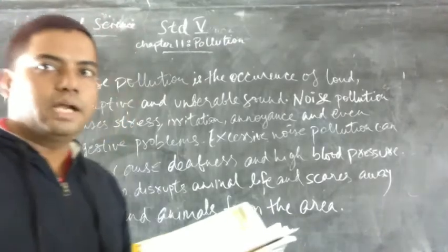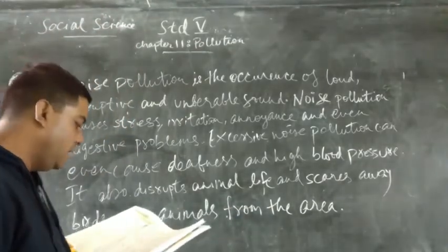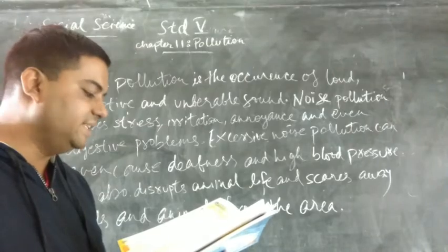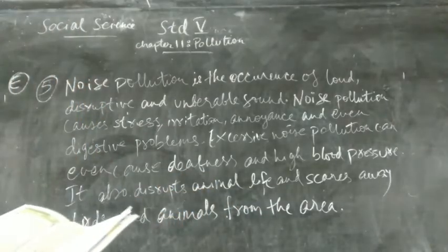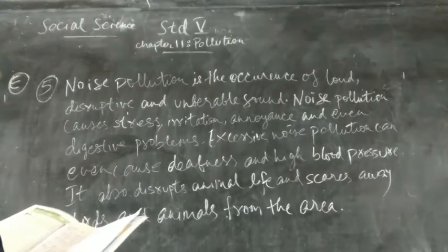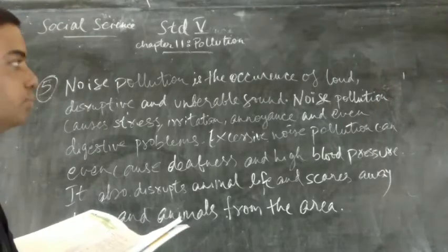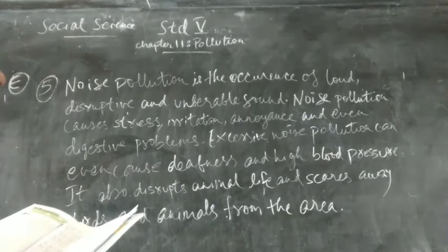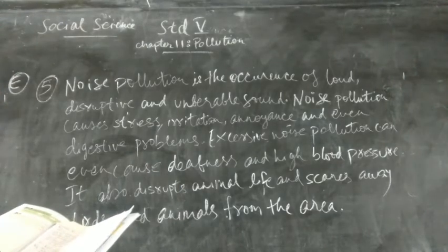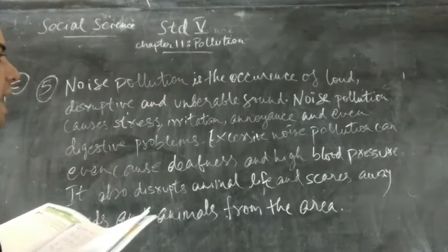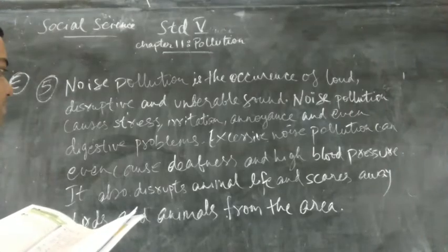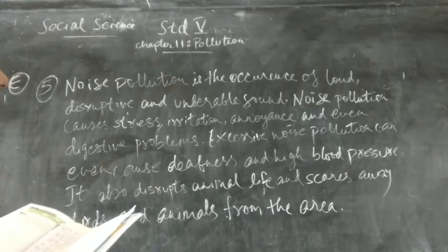Now we come to the last question of this chapter: what is noise pollution and how does it affect us and our wildlife? Noise pollution is the occurrence of loud, disruptive, and unbearable sound. Noise pollution causes stress, irritation, annoyance, and even digestive problems. Excessive noise pollution can even cause deafness and high blood pressure. It also disrupts animal life and scares away birds and animals from the area.